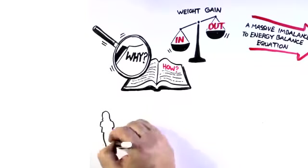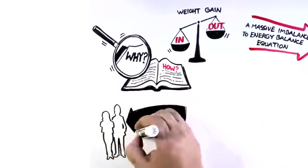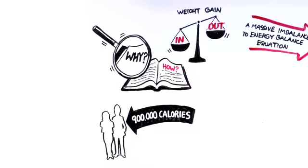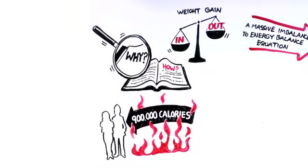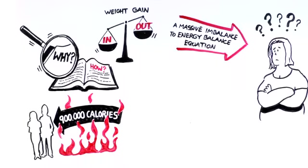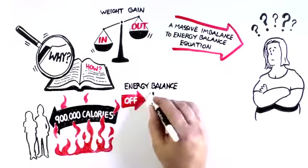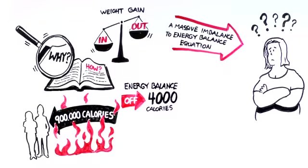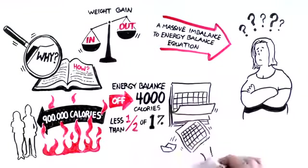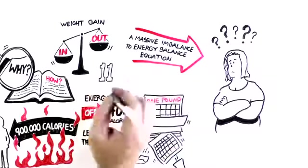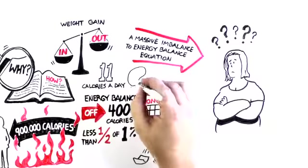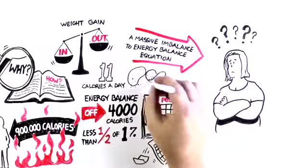Consider this. If you're an average person, you consume about 900,000 calories per year. And it's true that you'd need to burn 900,000 calories to avoid gaining weight. If your energy balance were to be off by only 4,000 calories, an error term of less than one half of 1%, you'd gain a pound every year. If you break that down, we're talking about a mismatch of 11 calories per day, the equivalent of approximately two potato chips.